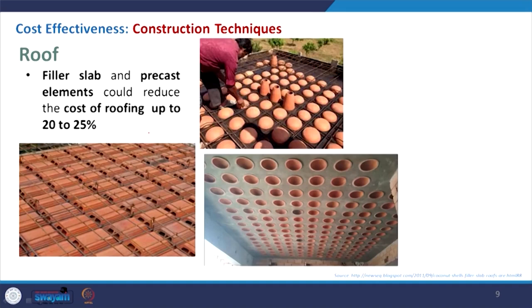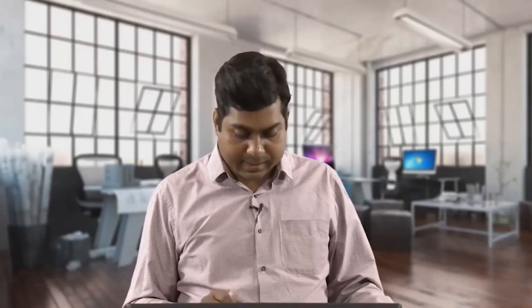Coming to the roof, instead of a plain homogeneous same-thickness concrete slab, another cost effective technique is to use some kind of terracotta tiles or similar forms — a filler slab technique — where concreting is done and after removing the shuttering from the bottom it looks textured. Without compromising the strength, this can achieve savings of up to 20 to 25 percent of the cost compared to a traditional RCC slab. This kind of arrangement can also enhance aesthetic value — someone may even use light fixtures within the hollow members.